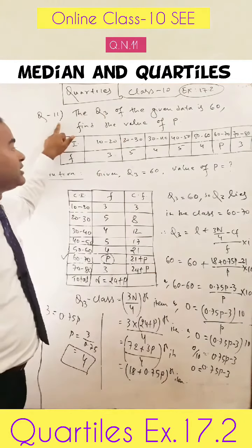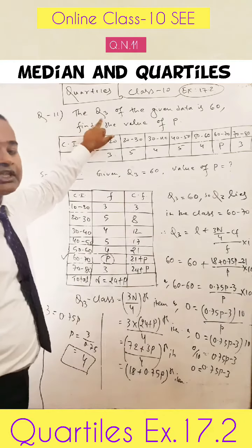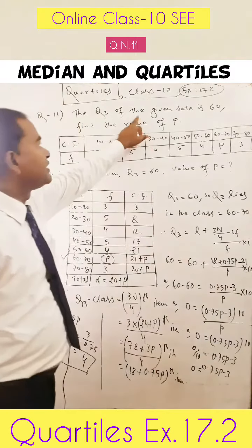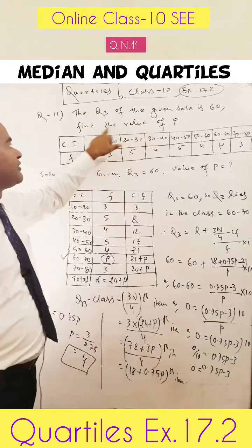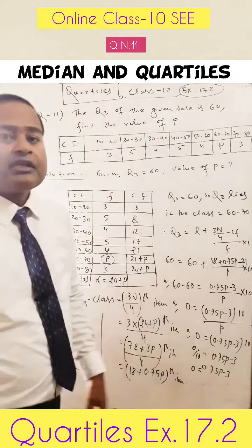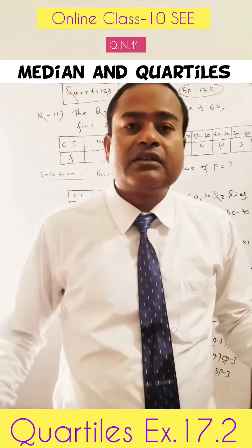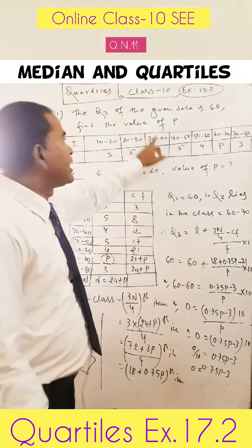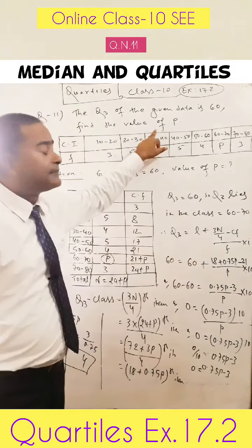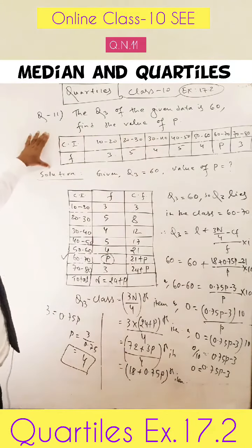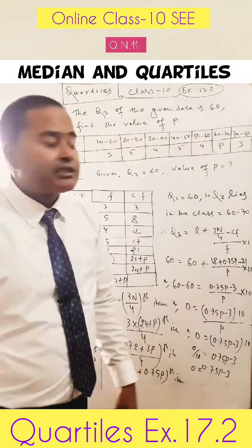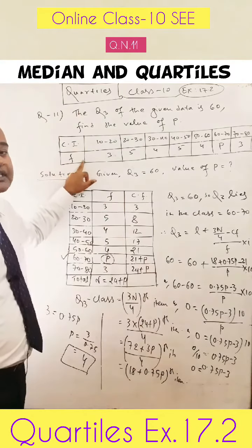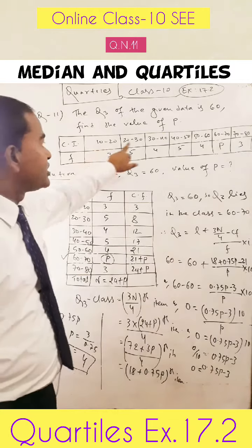So dear friends, according to question 11, the Q3 — Q3 means the third quartile — the third quartile of the given data is 60. Find the value of P. So in this question we are given the value of the third quartile, that means Q3 is equal to 60, and we have to find out the value of P. The given data is a continuous series. We are given class intervals and frequency. The class intervals are 10 to 20,